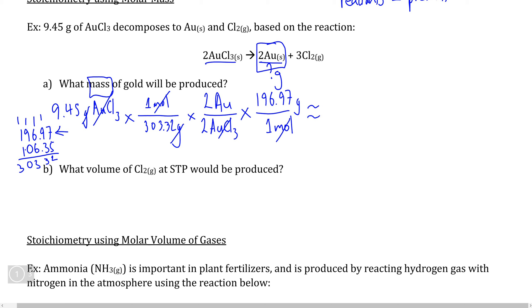If you put this into your calculator, this number comes to approximately 6.14 grams of gold, rounded to three significant digits.